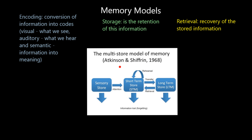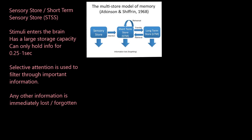So, the multi-store model of memory developed by Atkinson and Shiffrin. Why is it called the multi-store model? Atkinson and Shiffrin said we store information in three different memory locations: a sensory store, more technically called the short-term sensory store or STSS; a short-term memory, also known as STM; and a long-term memory, also known as LTM. They are all slightly different from each other.